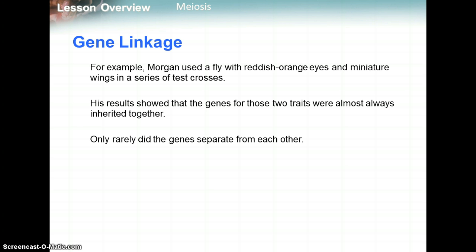Morgan used a fly with reddish-orange eyes and miniature wings in a series of test crosses. What he saw was that the genes for those two traits were almost always inherited together — if a fly had miniature wings, it usually also had reddish-orange eyes. Only rarely did the genes separate from each other, so they're kind of linked together.